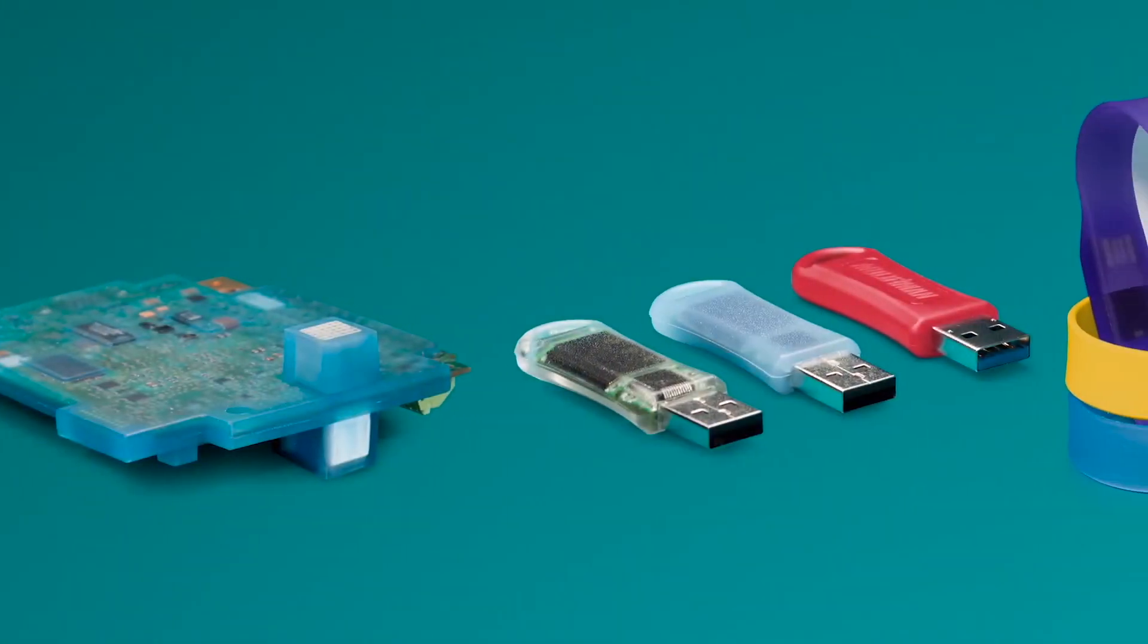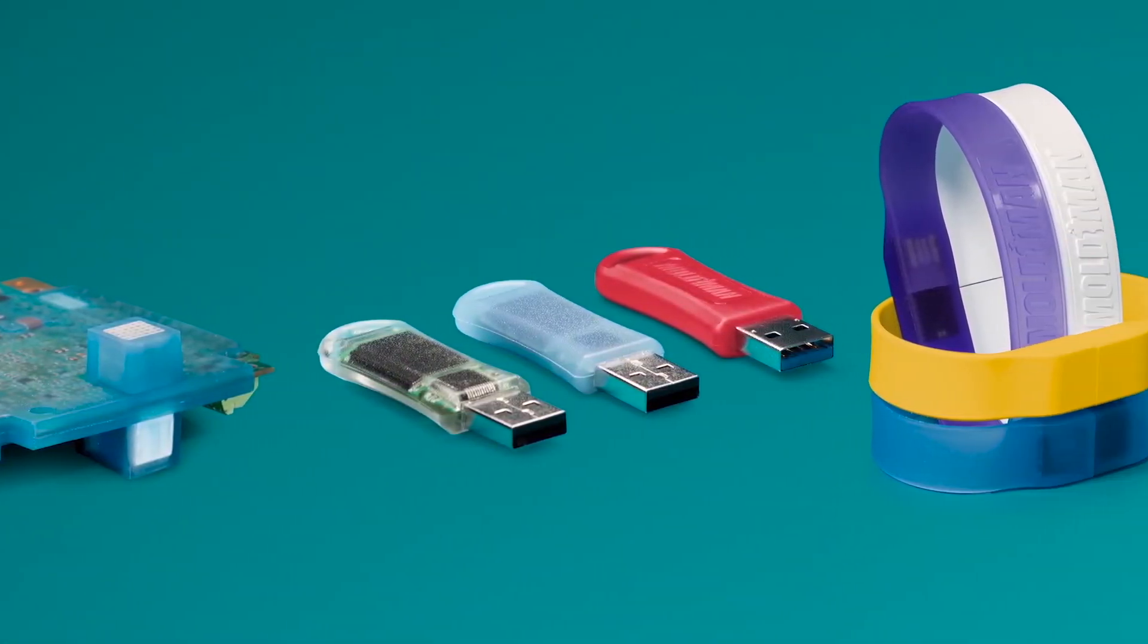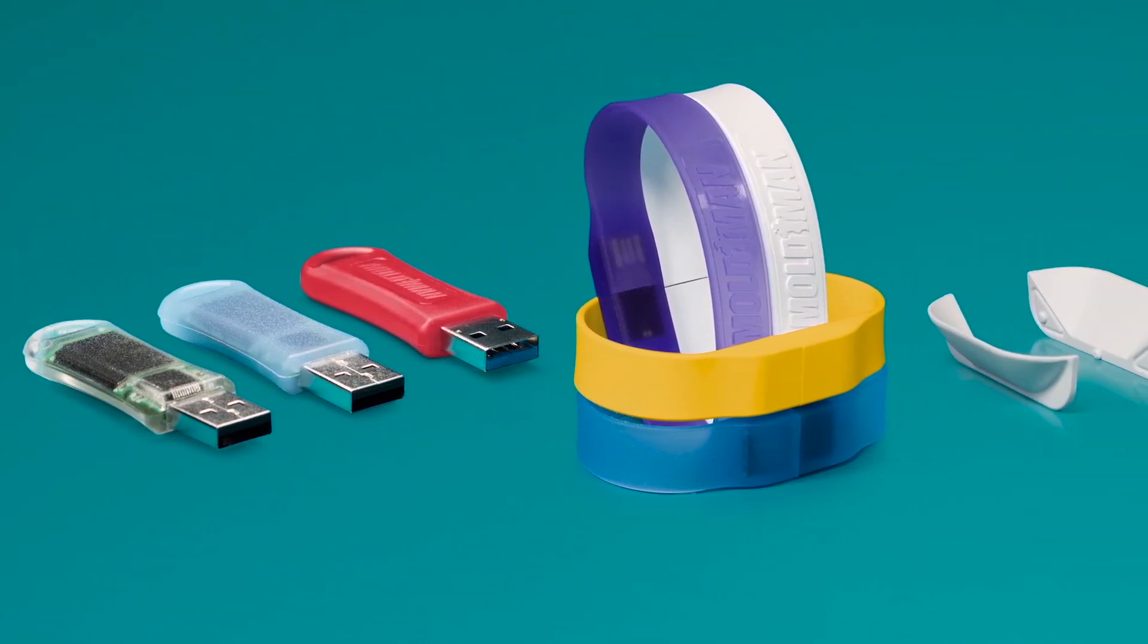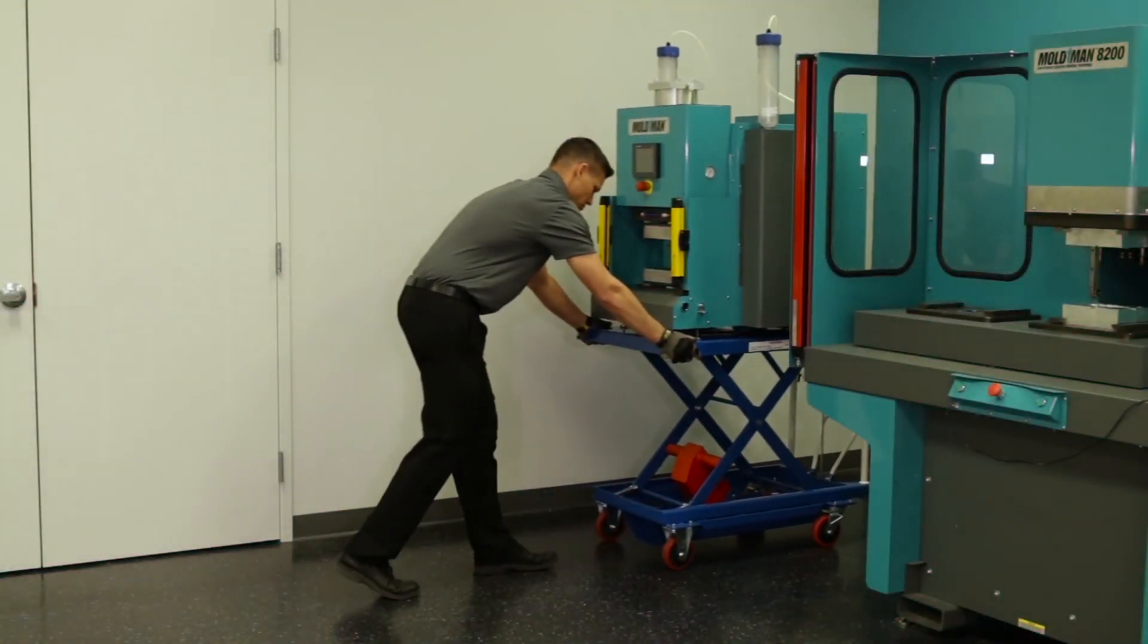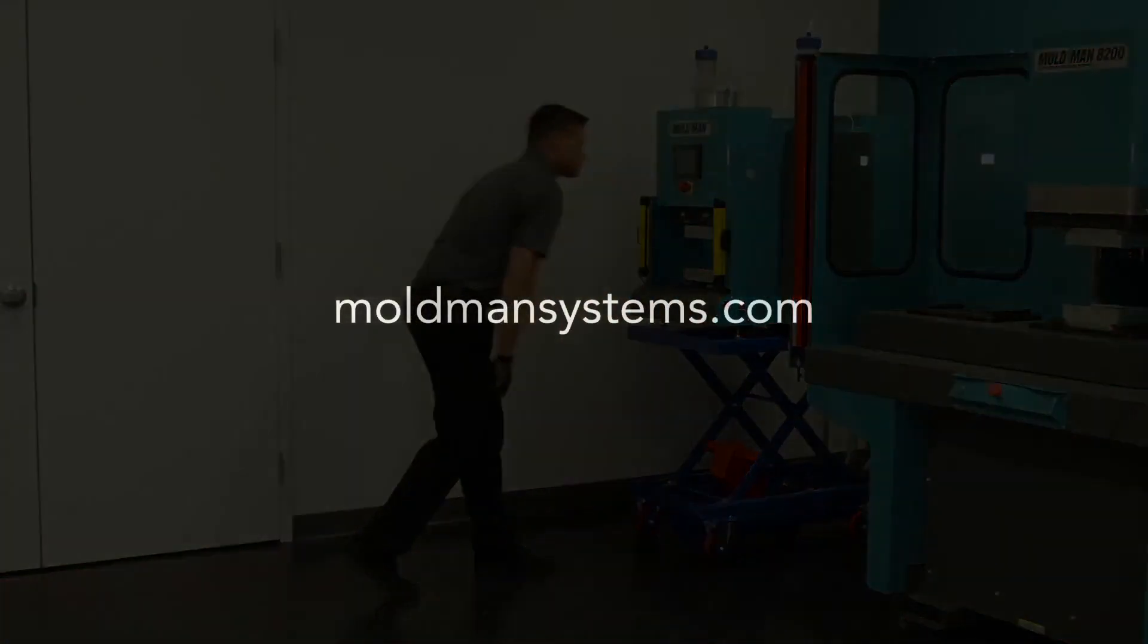The Moldman 2050 is ideal for encapsulating electronics and stand-alone molded parts with the ability to run multiple one-part and two-part materials and will fit in just about any workspace. To find out more, visit MoldmanSystems.com.